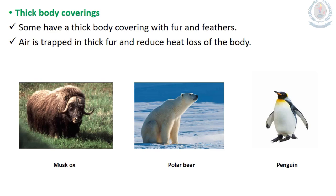Thick body covering: some animals have a thick body covering with fur and feathers. Air is trapped in thick fur and reduces heat loss from the body. Musk oxen and polar bears have thick fur coats, and penguins have thick feathers. All these adaptations help to reduce heat loss from the body.